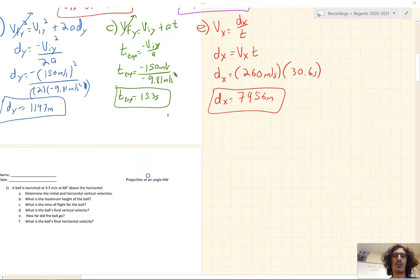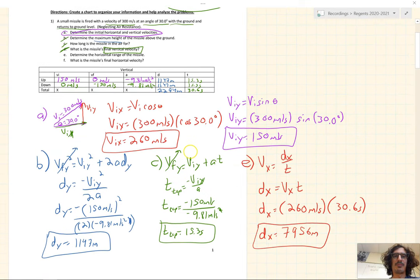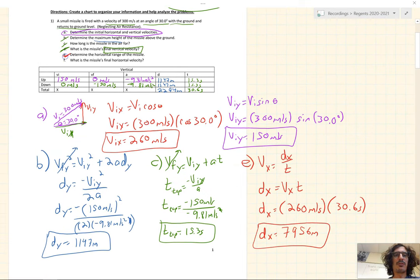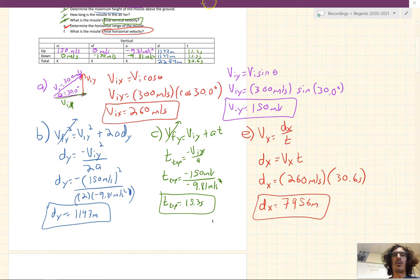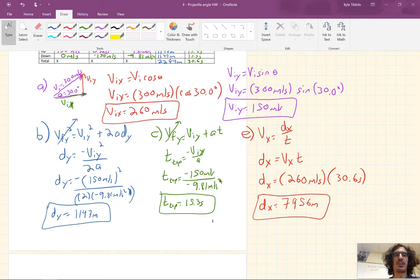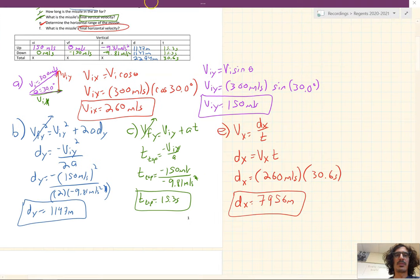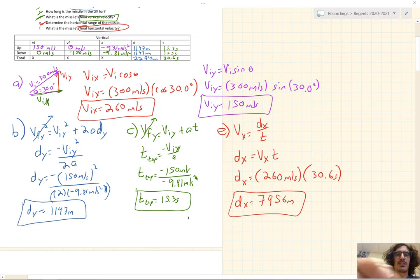And that's our horizontal distance. Lastly, letter F, what is the missile's final horizontal velocity? Horizontally, the velocity does not change, it's constant. So our VF is 260 meters per second.